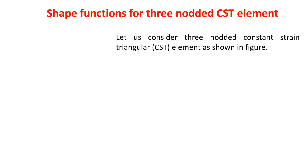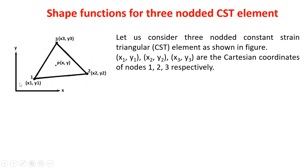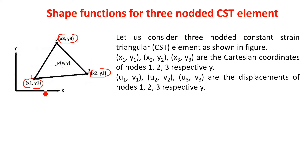For shape functions, if you consider the three-noded CST element as shown in the figure, there are three nodes numbered 1, 2, 3. X1, Y1, X2, Y2, X3, Y3 represent the Cartesian coordinates of these three nodes. At each node of the CST element, there are two degrees of freedom: horizontal displacement and vertical displacement. So U1, V1, U2, V2, U3, V3 are the displacements at nodes 1, 2, and 3 respectively.